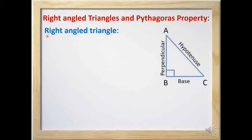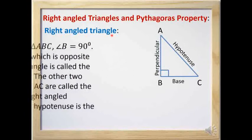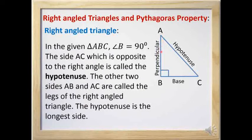Before learning the Pythagoras property, we should know something more about a right angle triangle. A right angle triangle is a triangle where one angle is equal to 90 degrees. Here, in triangle ABC, angle B is equal to 90 degrees. The side opposite to the right angle is called the hypotenuse. Here, AC is the side opposite to the right angle, so AC is called the hypotenuse.